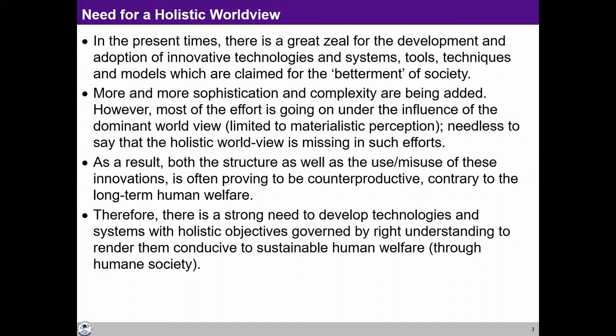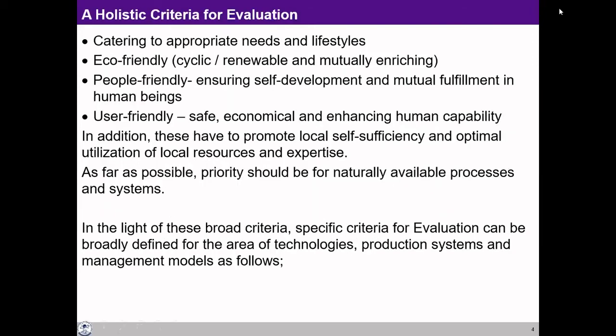Looking at the present situation, the need for working for holistic development and human society, and the need for developing appropriate production systems, appropriate technologies, and management models has become very necessary. What we intend to do in this session is to get some idea about such production systems, technologies, and management models — getting at least some basic guidelines, the basic principles, on the basis of which we can develop some criteria as a guideline for deciding on appropriate production systems, technologies, and management models.